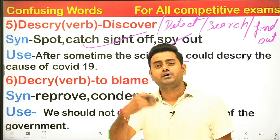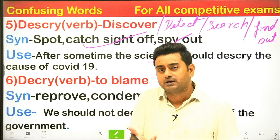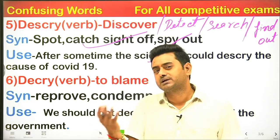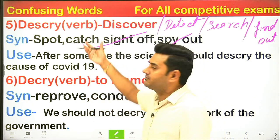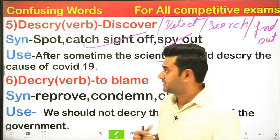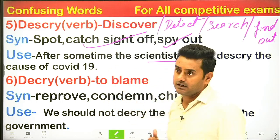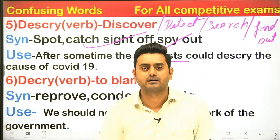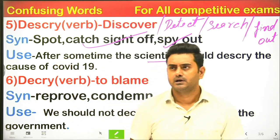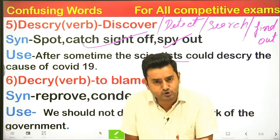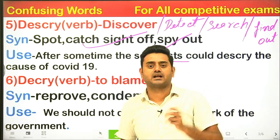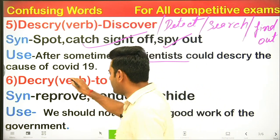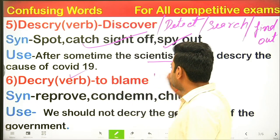Continuing with descry: the scientists discovered what was causing COVID-19. To descry means to detect any matter, to identify why a problem arose. When you detect or identify the root of an issue — that is descry.